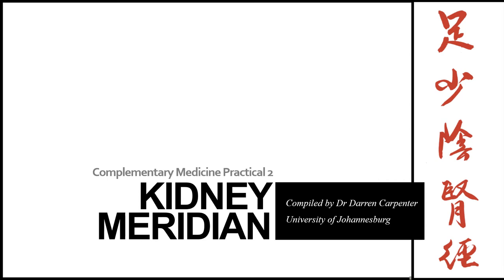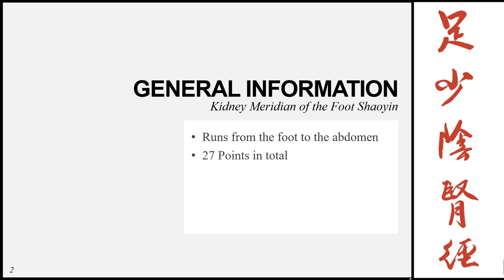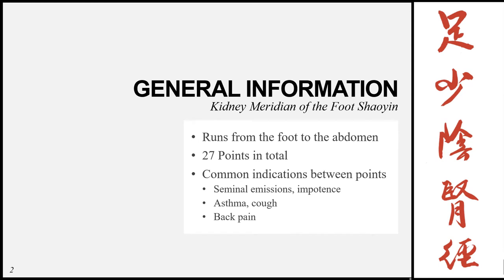Good morning class. Today we will be looking at the kidney meridian. The full name of this meridian is the Kidney Meridian of the Foot Shaoyin. This tells us that it's a yin meridian of the foot. All yin meridians on the feet flow from the feet to the abdomen. This meridian in particular has 27 points in total, and the common indications between these points are all related to the function of the kidneys according to Chinese medicine.